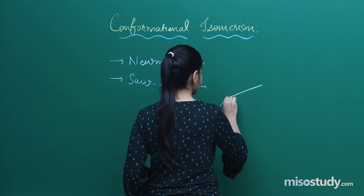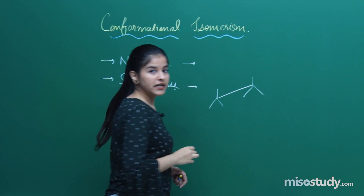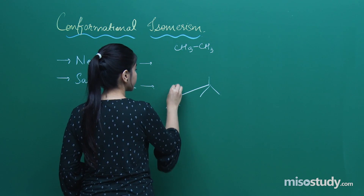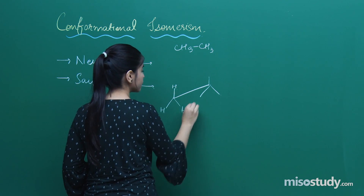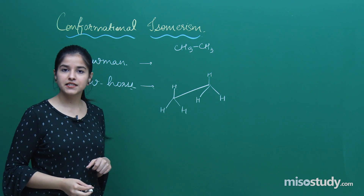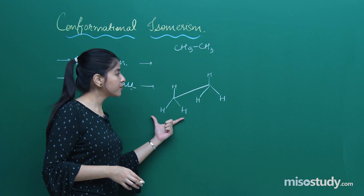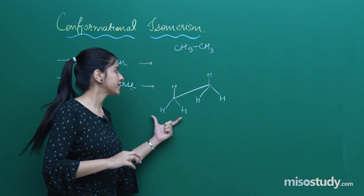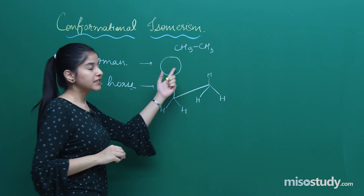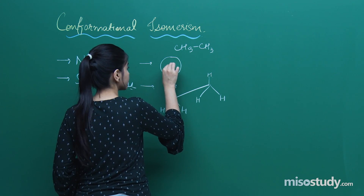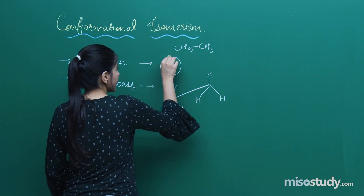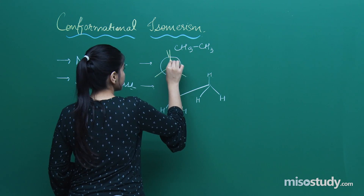In the case of ethane, we had discussed this kind of structure. Do not forget to mention the hydrogens here, because if you are not mentioning them, it will automatically mean that these are methyl groups attached. In the case of Newman, the circle represents the carbon which is behind, and the dot represents the carbon towards the observer, with the hydrogens placed accordingly.